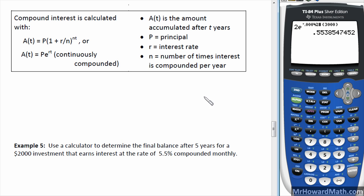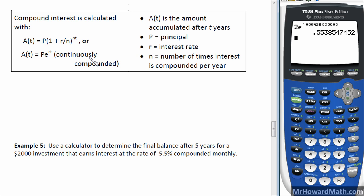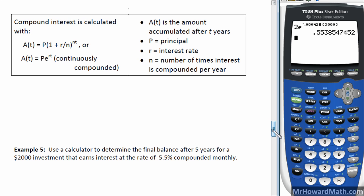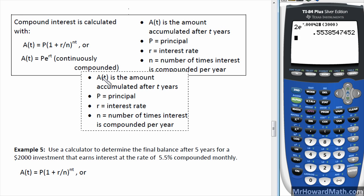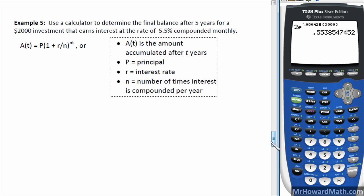Example five: use a calculator to determine the final balance after five years for a two-thousand-dollar investment earning interest at five and a half percent compounded monthly. For this we use the compound interest formula. Let's copy that formula down here so we can reference it while filling in the values.